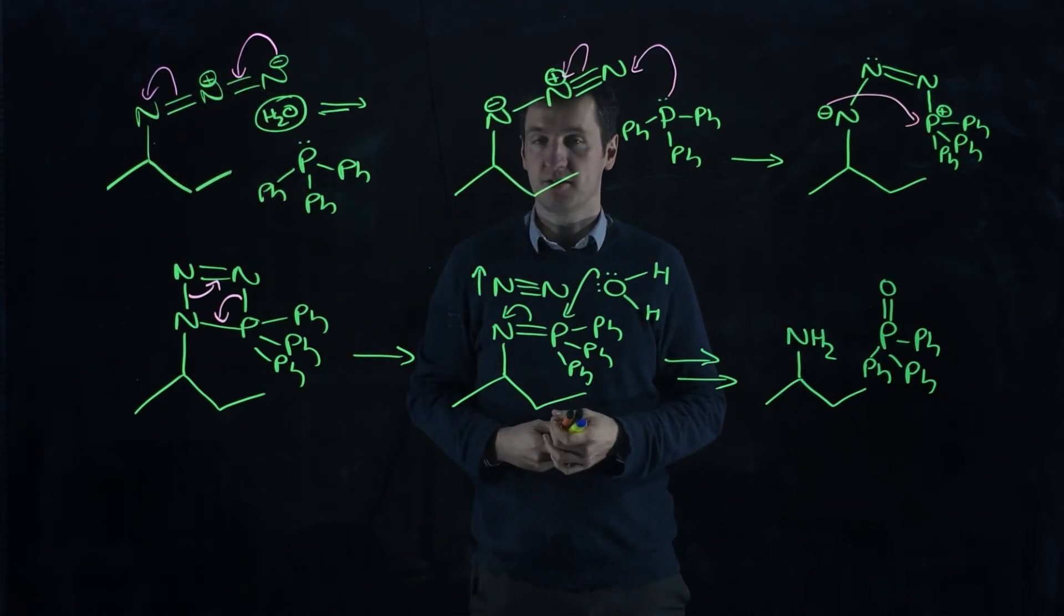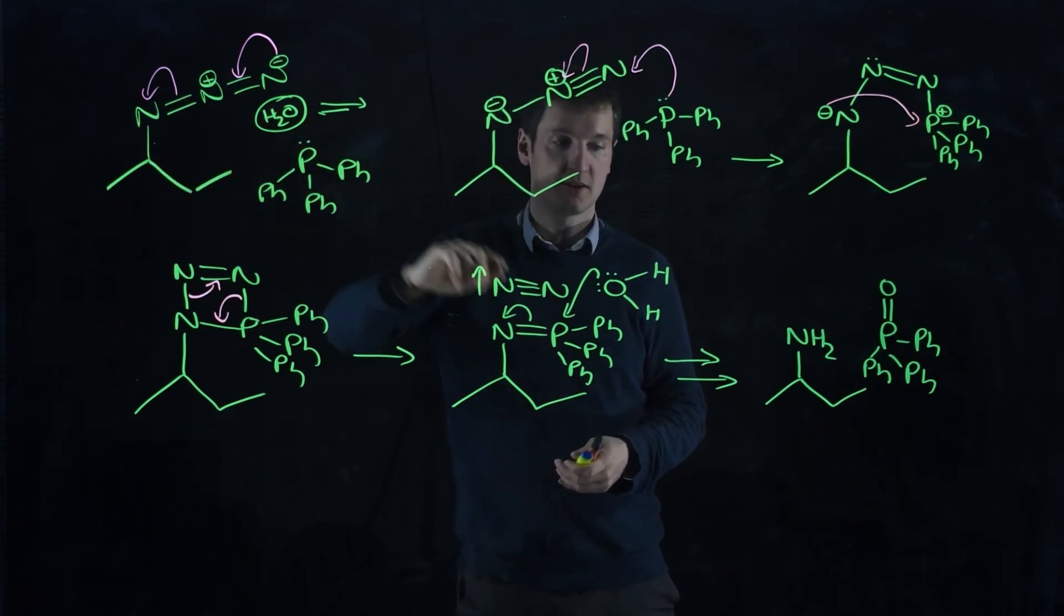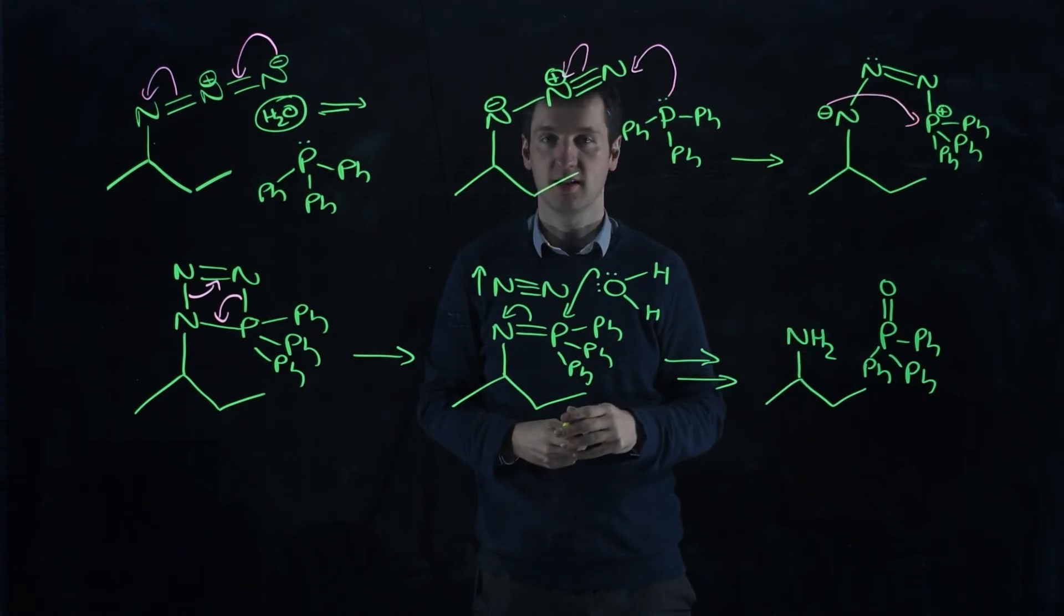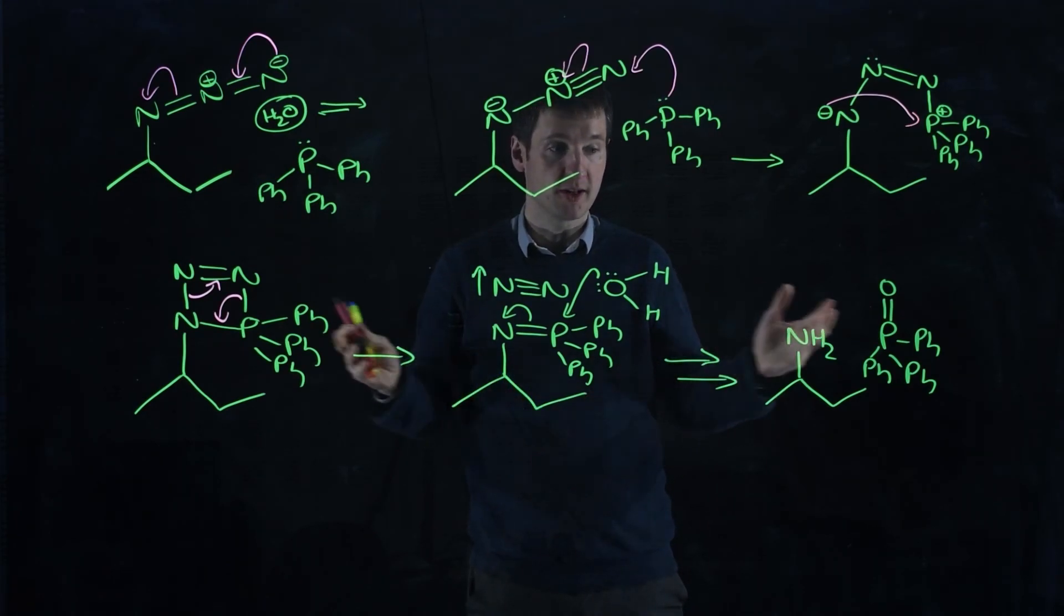So if you take your alcohol, you can use hydrozoic acid as your nucleophile, as your pronucleophile, to make an azide, and then you can turn that into an amine. And it's one of the easier ways of making an alcohol, a secondary alcohol, into a primary amine with retention of stereochemistry, or rather with inversion of stereochemistry.